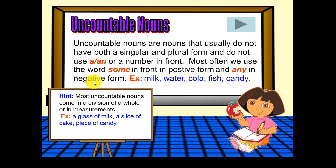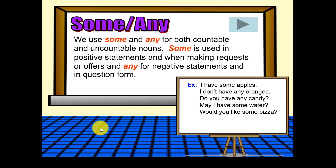In the negative form it will be 'I don't have.' So: I don't have any milk, I don't have any cake, I don't have any candy. So we use 'some' and 'any' for countable and uncountable nouns. 'Some' is used in positive statements and for making requests, 'any' for negative statements.